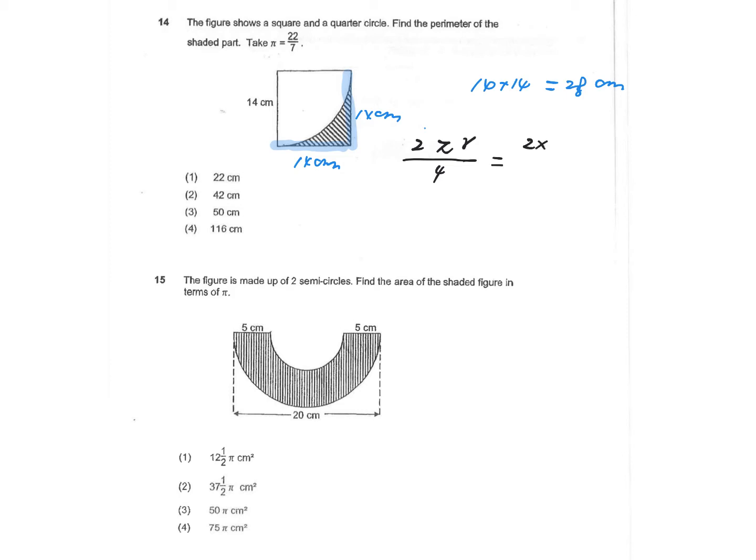So we have 2 multiplied by pi, pi equals to 22 over 7. And r in this case, the radius is circle, which is 14 centimeters, then divide it by 4.